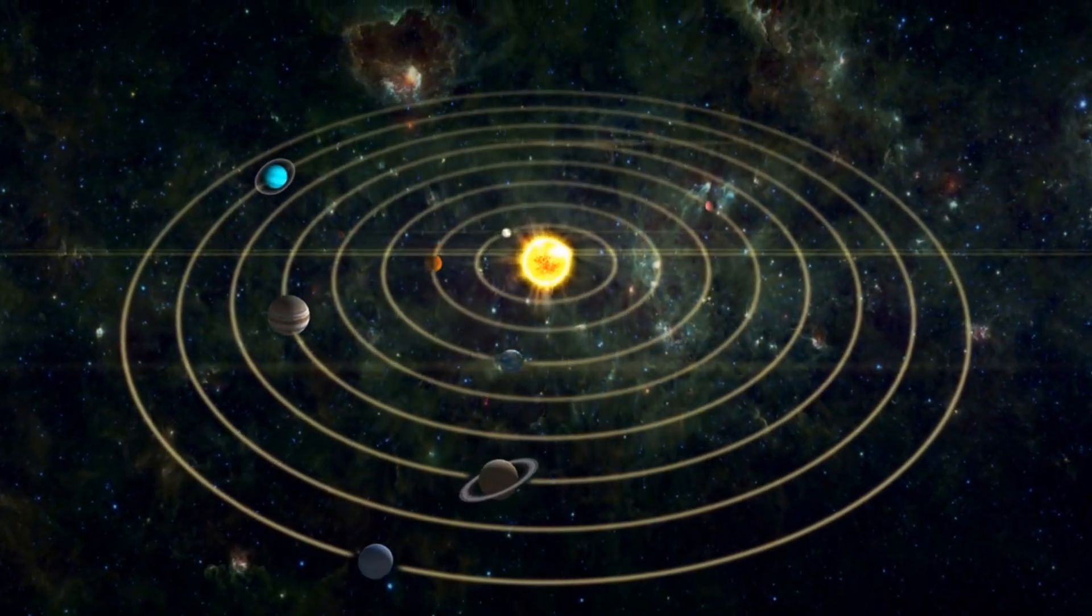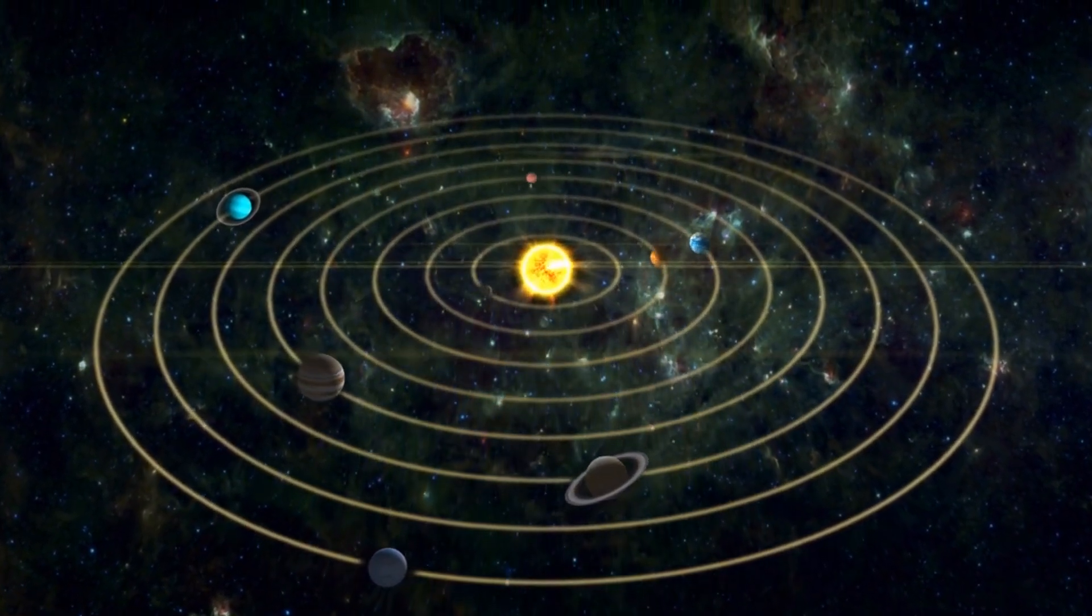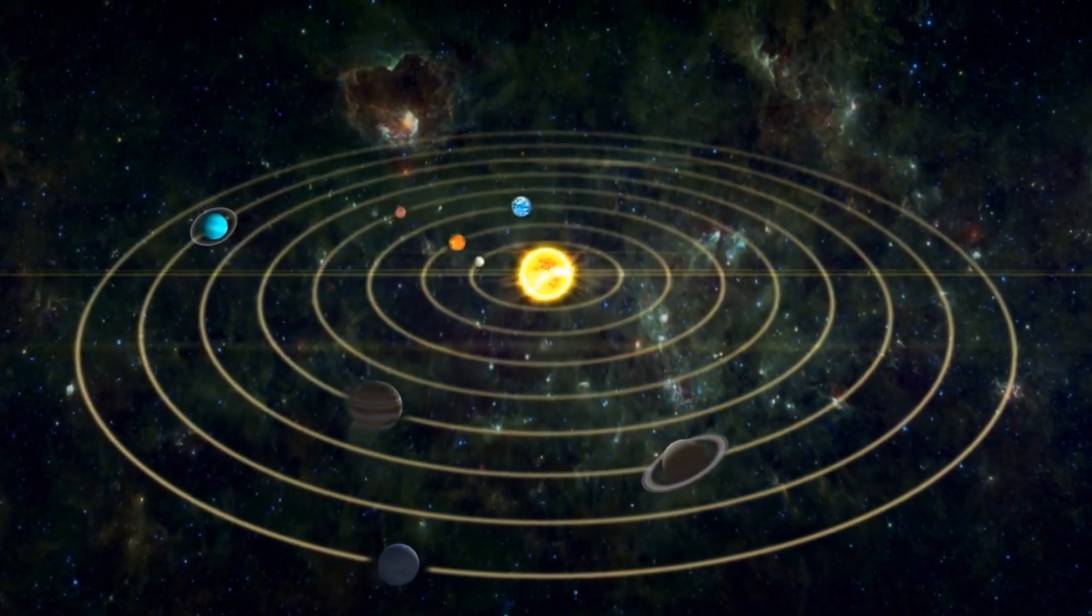Because of its severe axial tilt, which causes it to rotate on its side, this ice giant is unlike any other planet in our solar system.